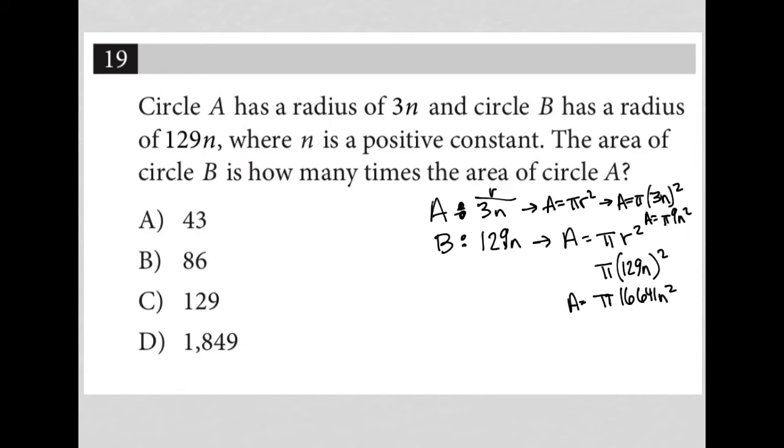So the question is basically asking, what do I have to multiply that by in order to get this? That's the question. If I have pi 9n squared, what do I multiply that by? I'm going to call it X to equal pi 16,641n squared.